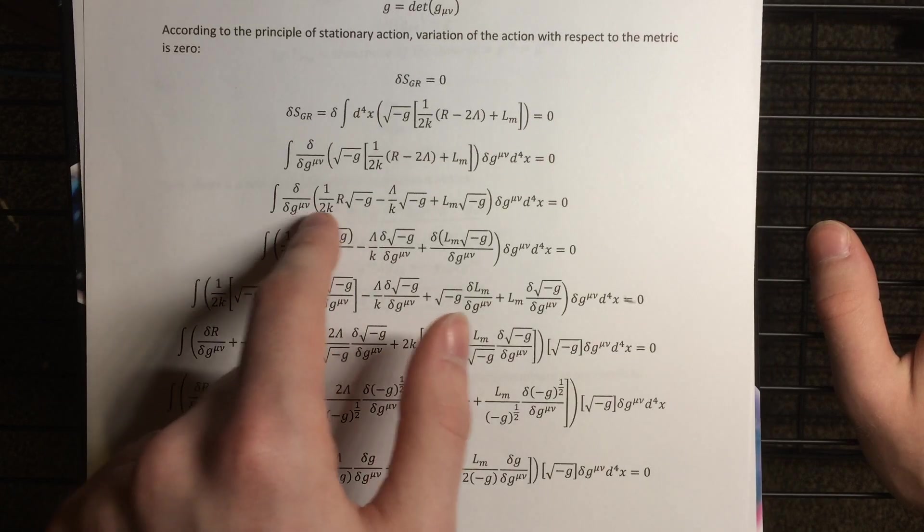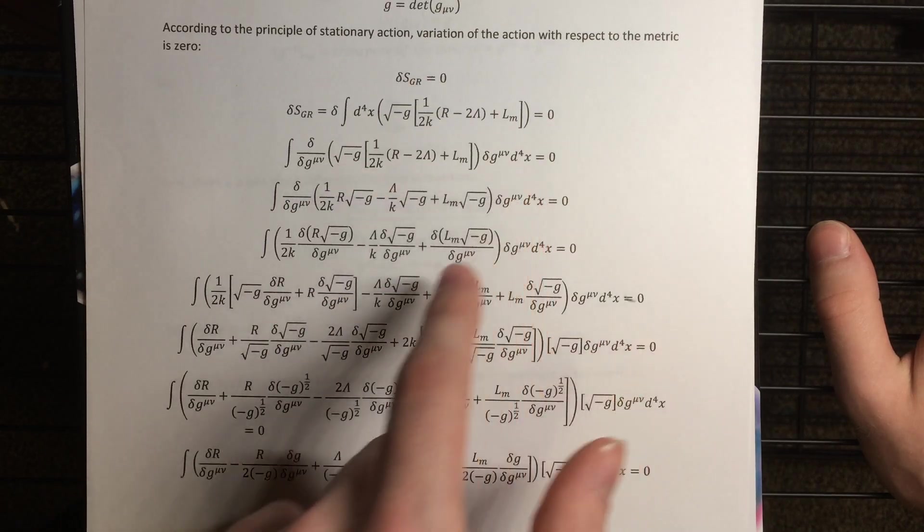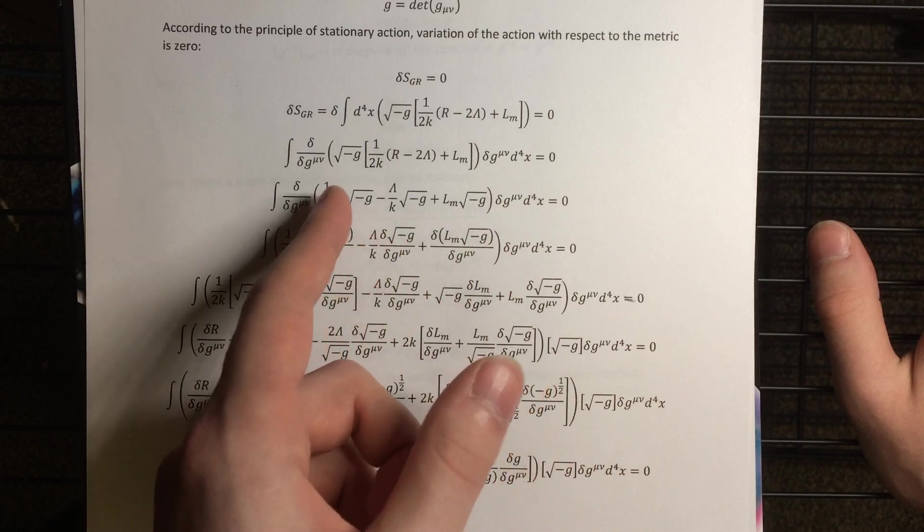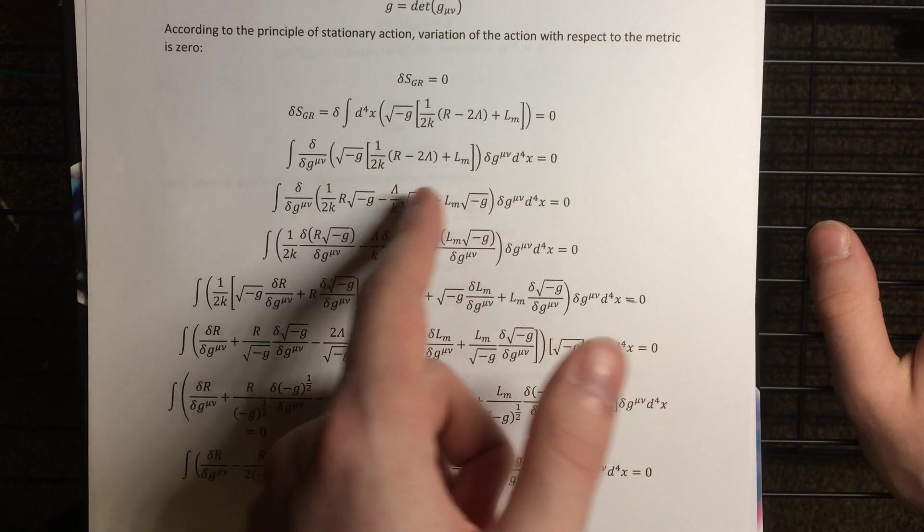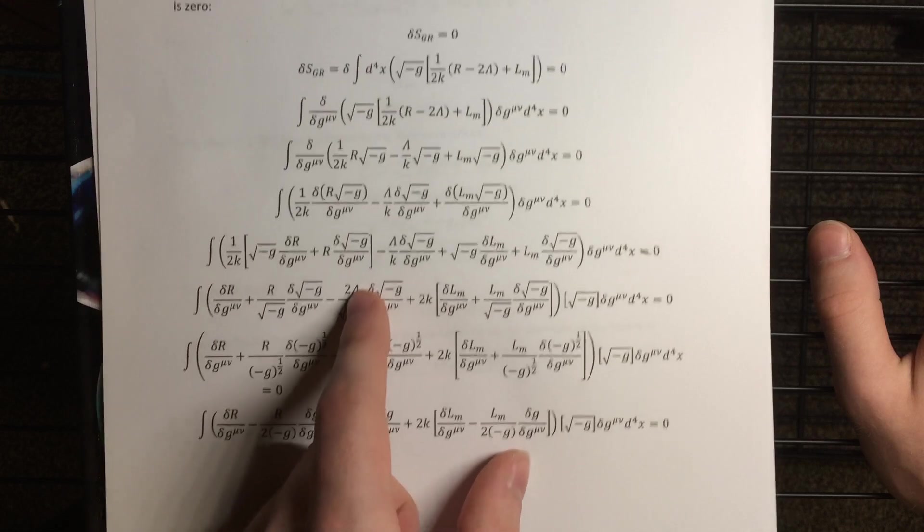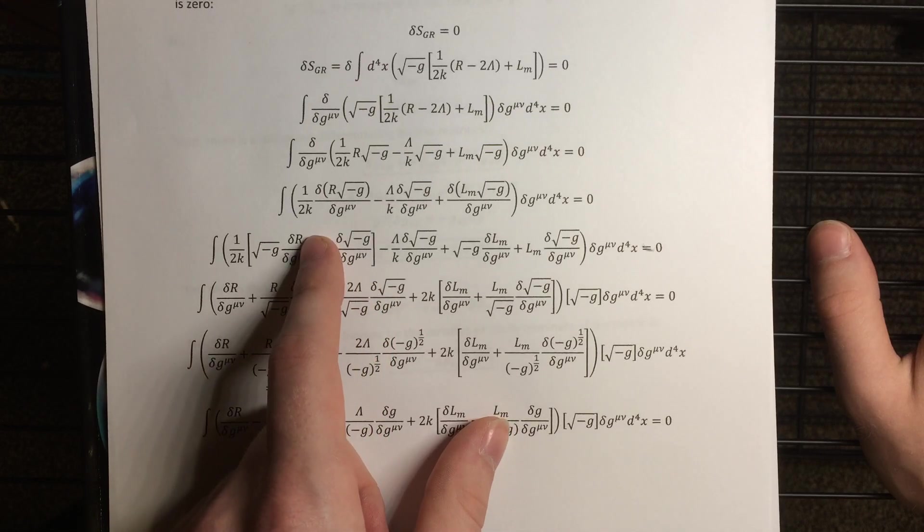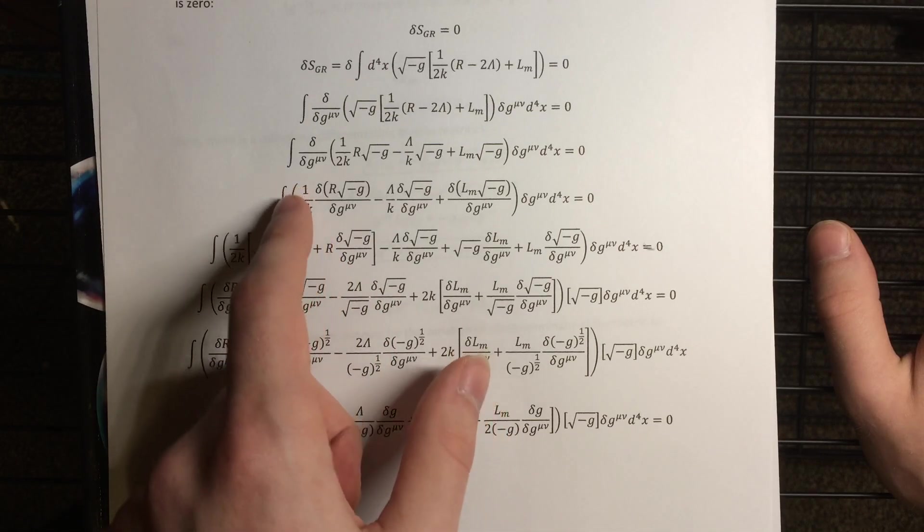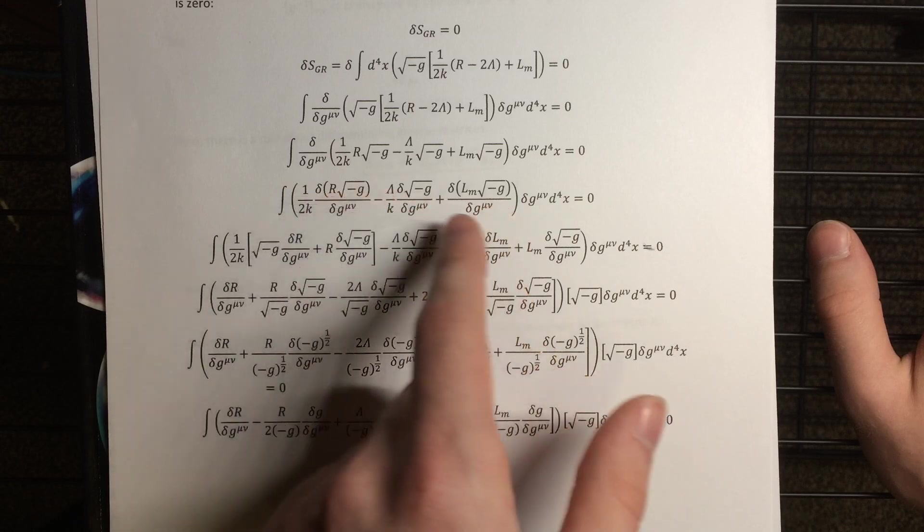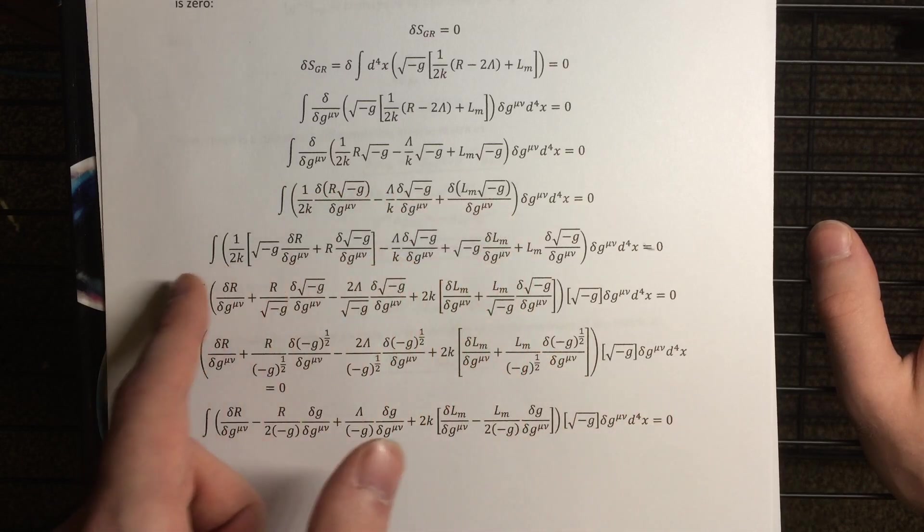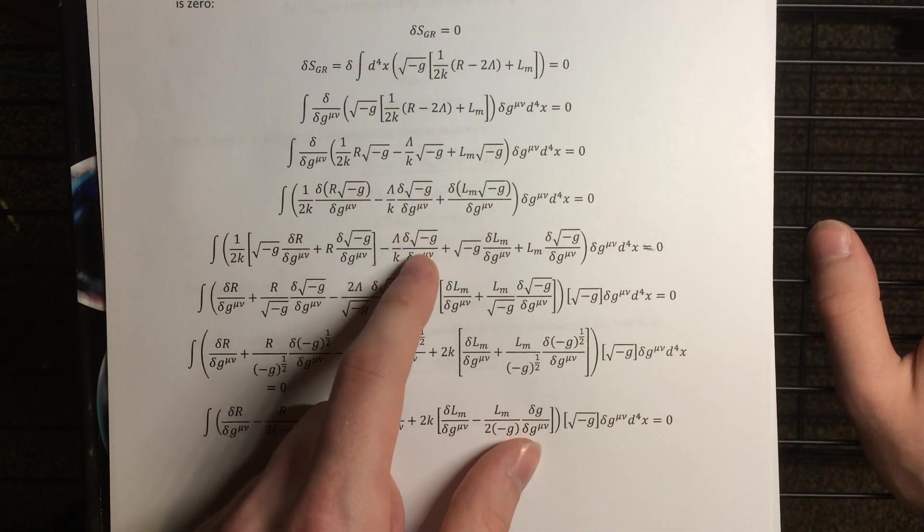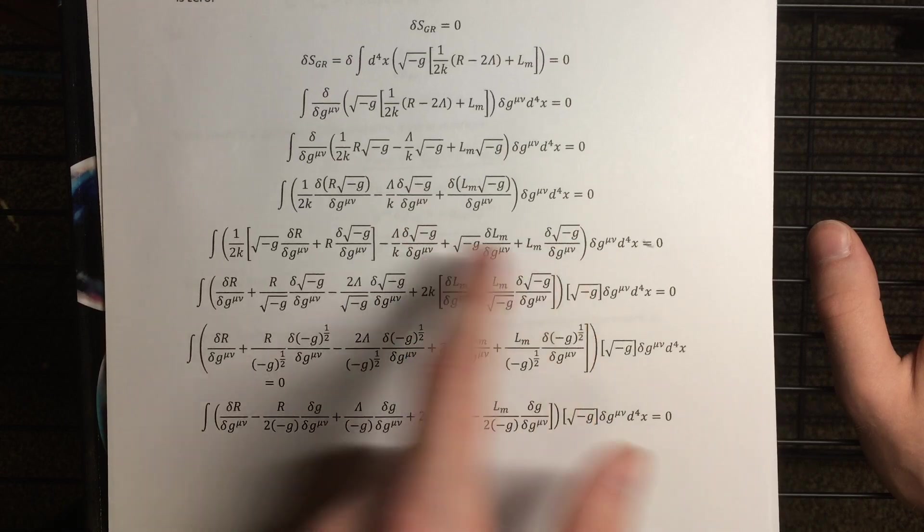Okay, so the first thing I did was I just multiplied this factor through, and the reason why is because I wanted to deal with these terms separately, the functional derivative of these terms separately. So then distributing that functional derivative through on these terms gives us this. Now we use the product rule to expand out the terms that are products, so this one isn't affected, but the other two are.